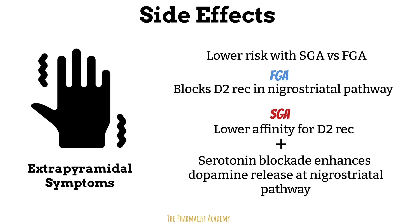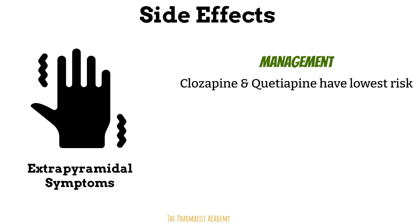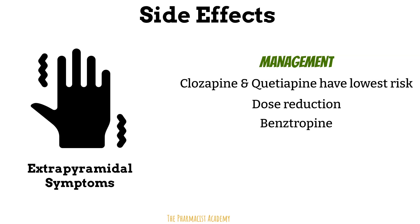EPS can be managed by switching to agents like clozapine and quetiapine, which have the least risk for EPS. The dose may also be reduced, and we can give anticholinergics like benztropine for Parkinsonian symptoms — things like tremors, bradykinesia, and muscle rigidity. In other words, the EPS that these drugs can cause can present like Parkinsonian symptoms.